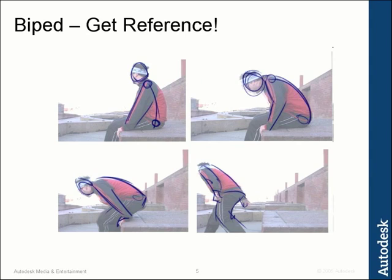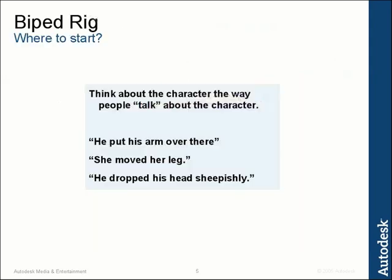We're going to start working on our biped now. How do you actually figure out what to do when you start working on the rig? The first thing I like to do is think about the character the way people talk about it. If you're doing a biped or a human, people talk like this: 'He put his arm over there. She moved her leg. He dropped his head sheepishly.' They talk about body parts in ways that make sense.